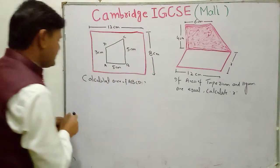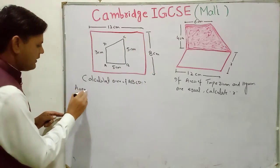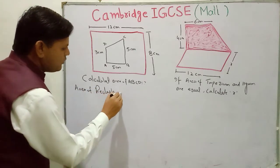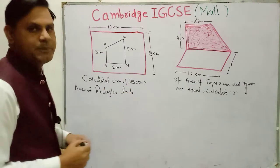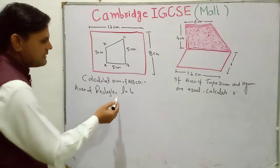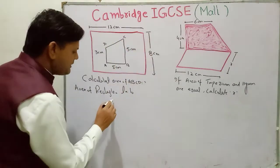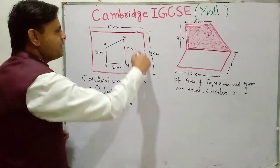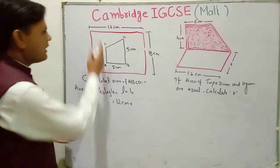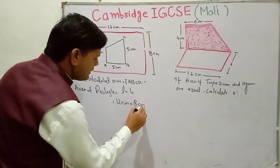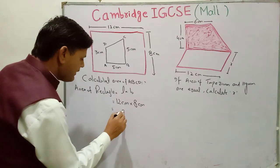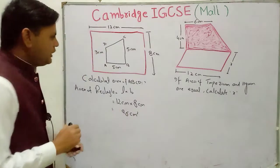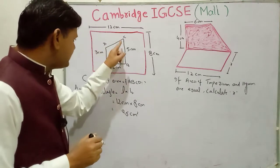Area of rectangle is equal to L × B, where L means length and B means breadth. Here the length is equal to 12 centimeters, multiply by B. The area will be 96 centimeters squared. Now you find the area of the second shape.